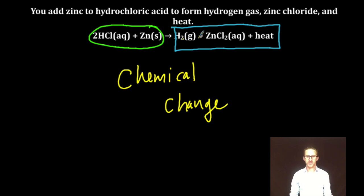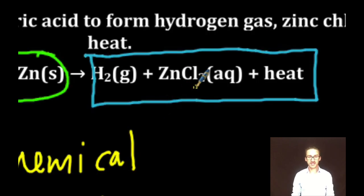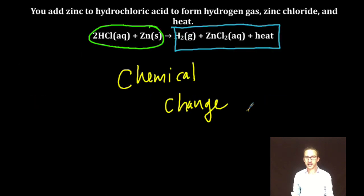On the product side, notice what has happened. The chlorine is now bonded with the zinc and the hydrogen is now in its elemental form. Identity change, chemical change. Bonds have been broken. New bonds have been formed. Chemical change.